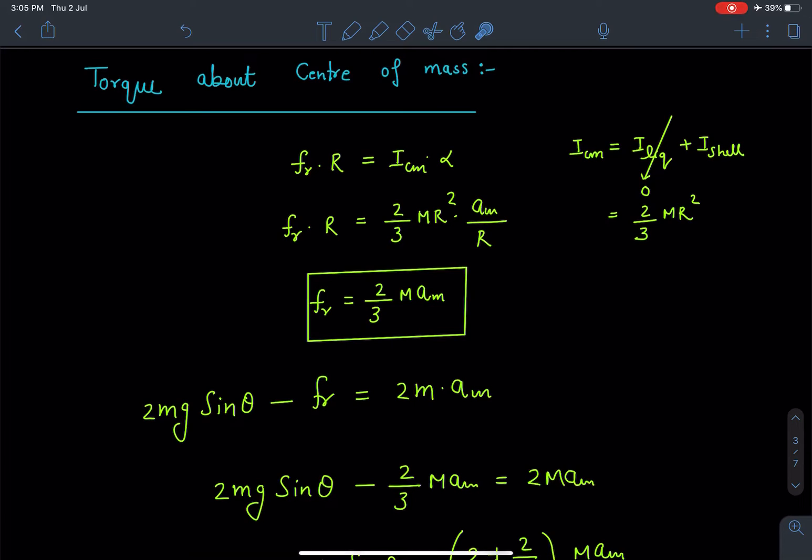So that is equal to I_CM α where I_CM will be moment of inertia of liquid plus moment of inertia of the shell. Since liquid is just translating its moment of inertia is going to be 0. There is no rotational component in the liquid part. So simply this I_CM will become (2/3)MR².